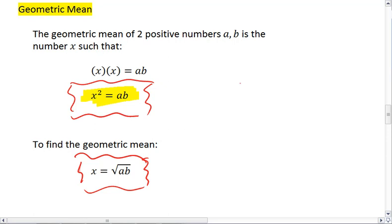We multiply the two numbers we're trying to find the geometric mean of together. For example, if we're finding the geometric mean of 2 and 10, we take 2 times 10, which equals 20, and then we take the square root of 20.